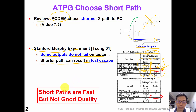So in conclusion, the previous timing-unaware ATPG tends to choose shorter paths, but this may not be a good idea.